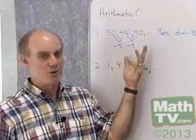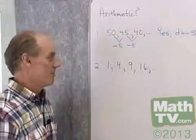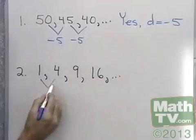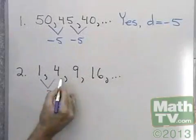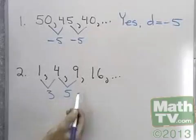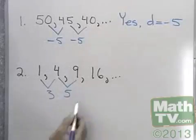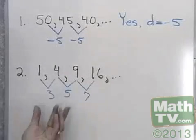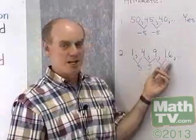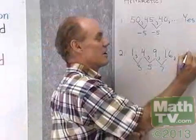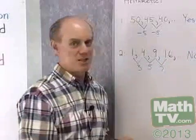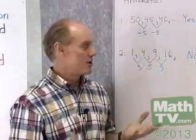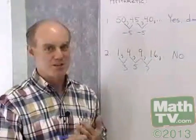That number can be negative, a fraction, or whatever you want. Now let's look at our second sequence: 1, 4, 9, 16. What would I add to 1 to get 4? The answer is 3. What do I add to 4 to get 9? The answer is 5. So right away I can tell this is not an arithmetic progression. Since I don't add the same number each time, this is not an arithmetic sequence. There is no common difference — it's some other kind of sequence.